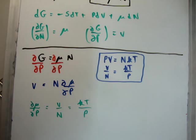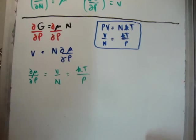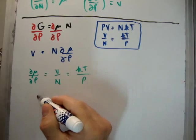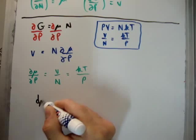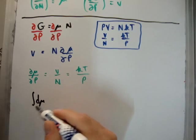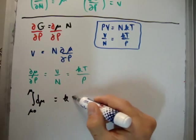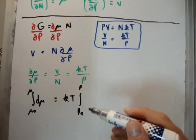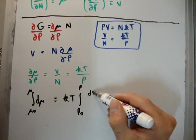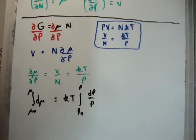Now, what we're going to do is we're going to integrate all of this. This is a pretty straightforward and pretty usual integral. And it turns out to be as follows: we're going to get del μ integrated between μ zero and μ. Let's assume that the chemical potential can change. Then we're going to get KT integrated from P zero to P, and we're going to have dP over P.